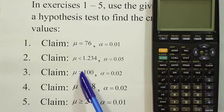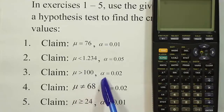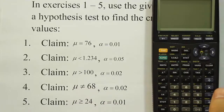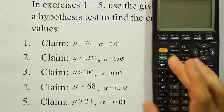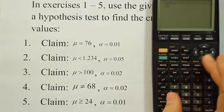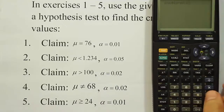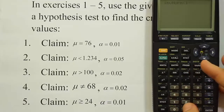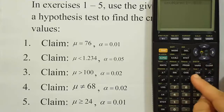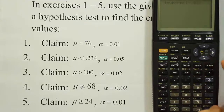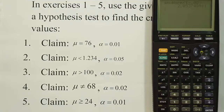This next one is a right-tailed test, so we give the calculator one minus alpha. Using second → distribution → inverse norm, we enter one minus the alpha of 0.02, close it up, hit enter, and we get a result of 2.054 to three decimal places.